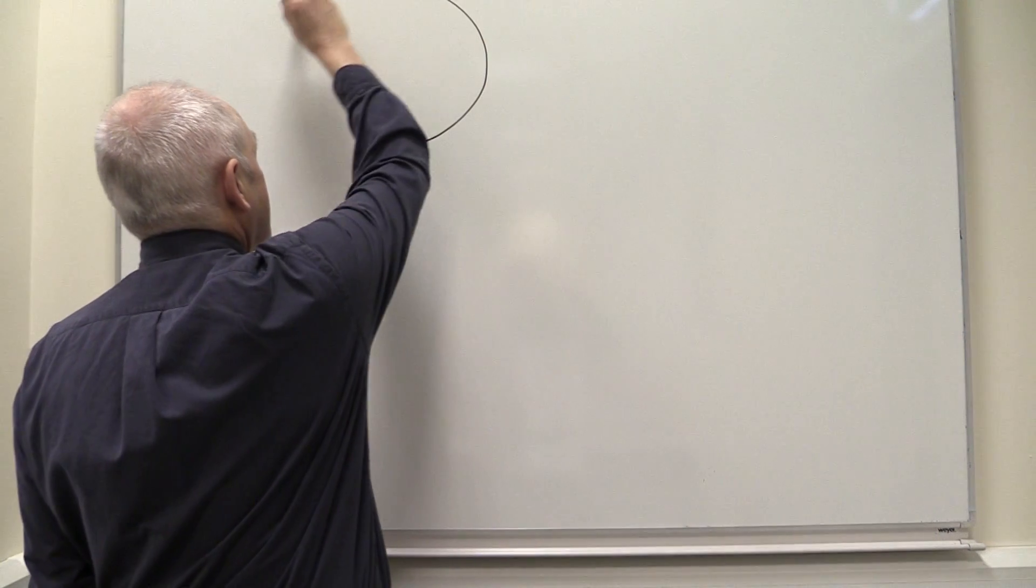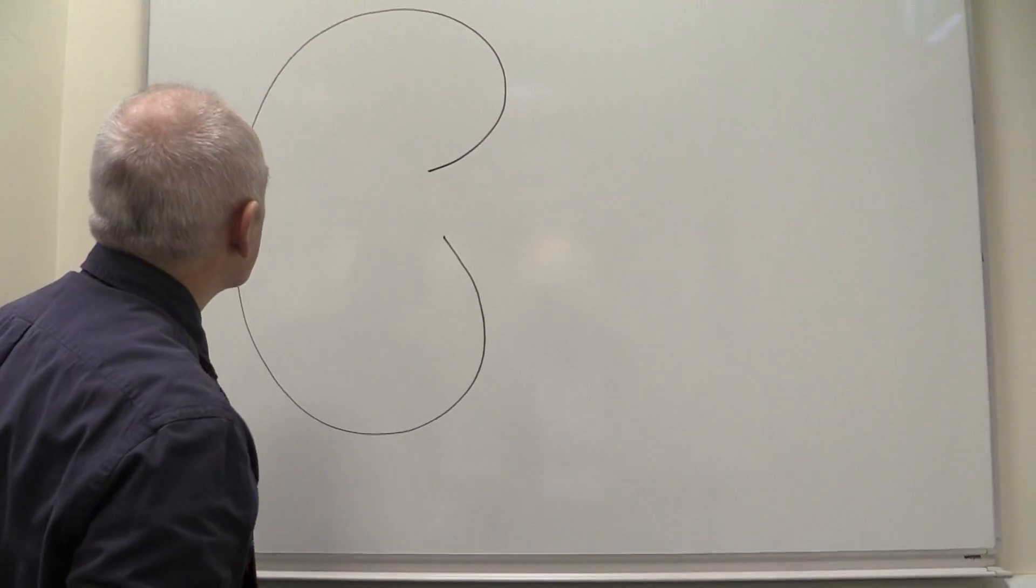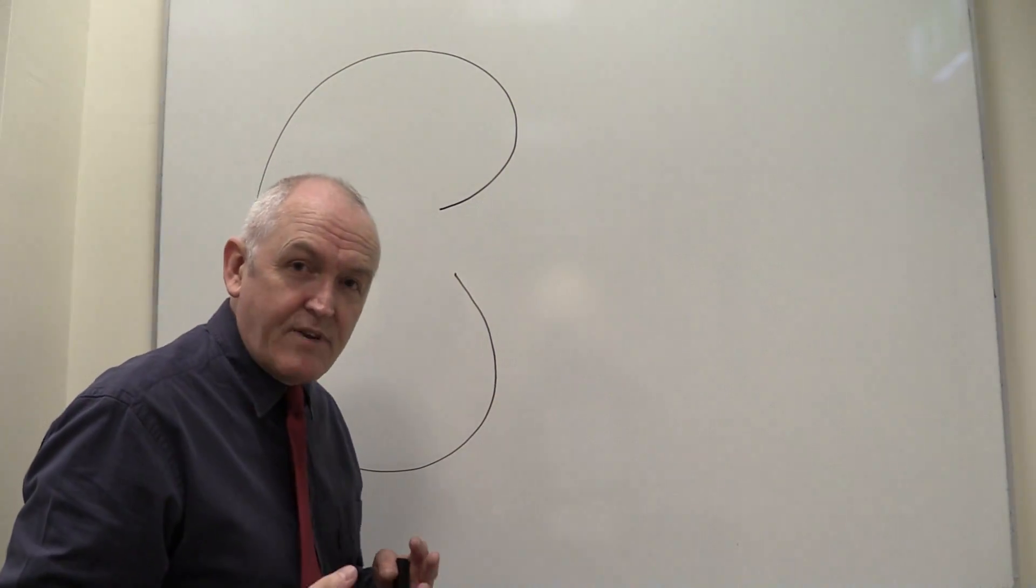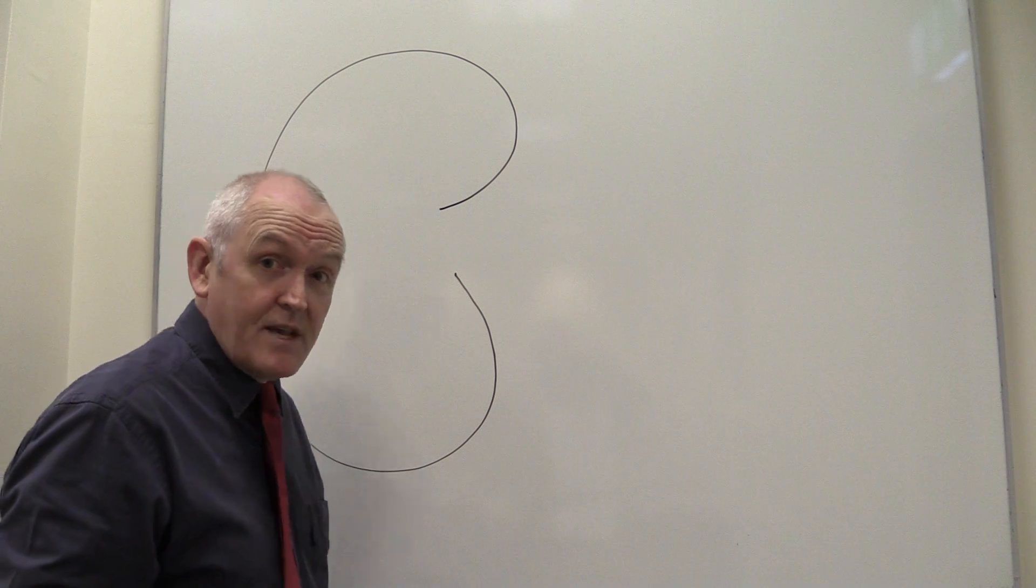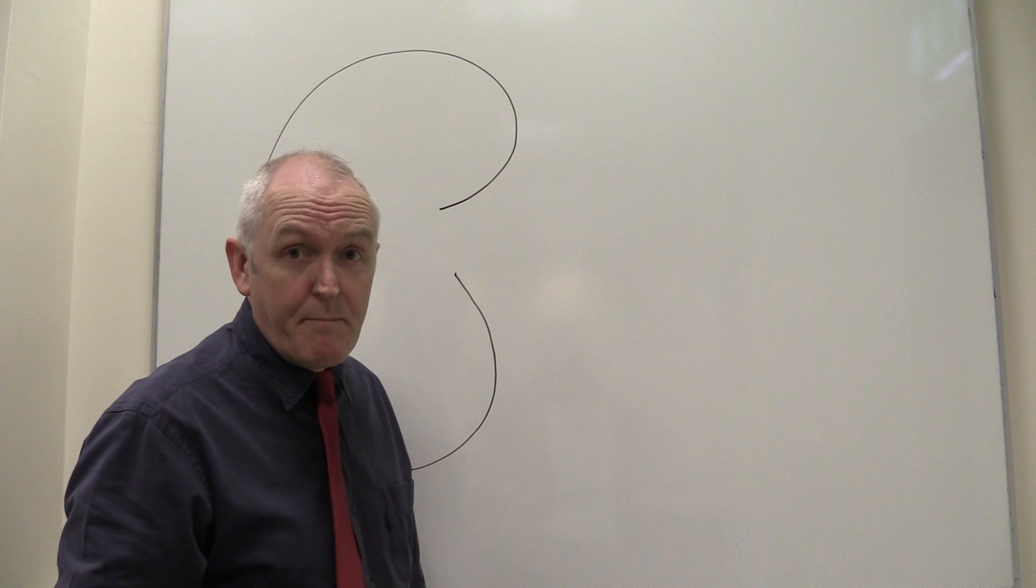So here we have a kidney, as we probably recognize the shape by now, and we know that there is a renal cortex and a renal medulla, and that the medulla is formed into medullary pyramids.